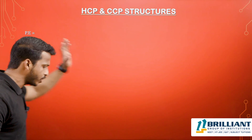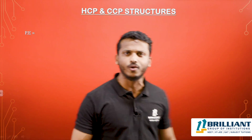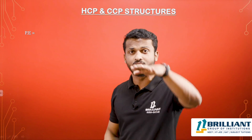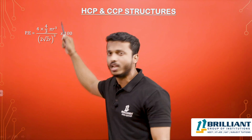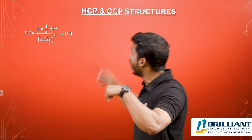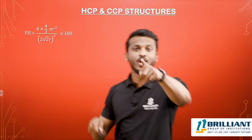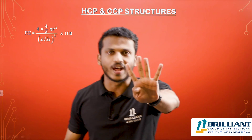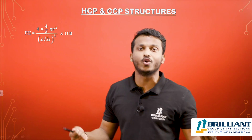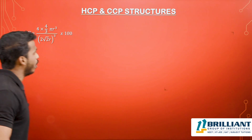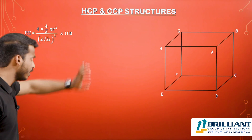Now let us calculate the packing efficiency. The equation is: packing efficiency = (volume occupied by spheres in the unit cell) / (total volume of unit cell) × 100. The volume of one sphere is (4/3)πR³. In FCC there are 4 spheres, so the numerator is 4 × (4/3)πR³, and the denominator is A³.